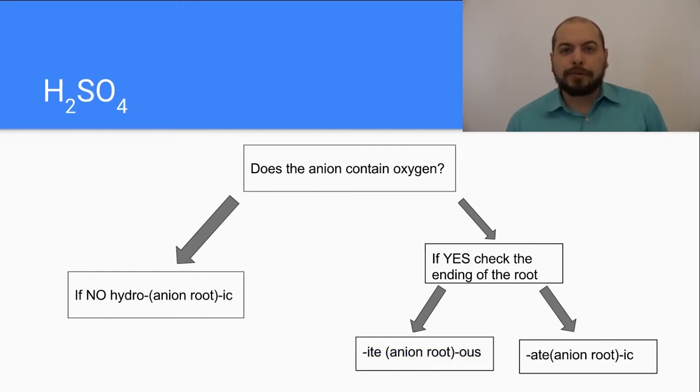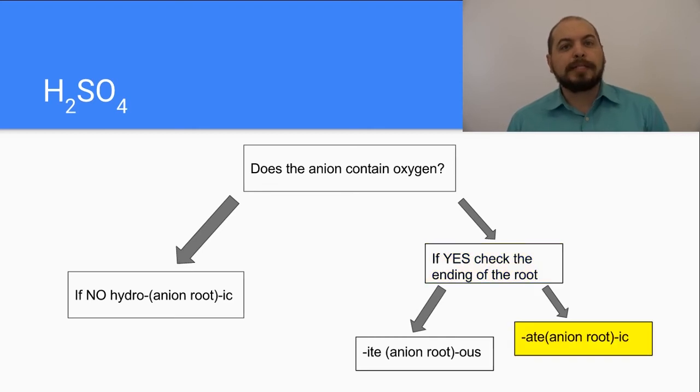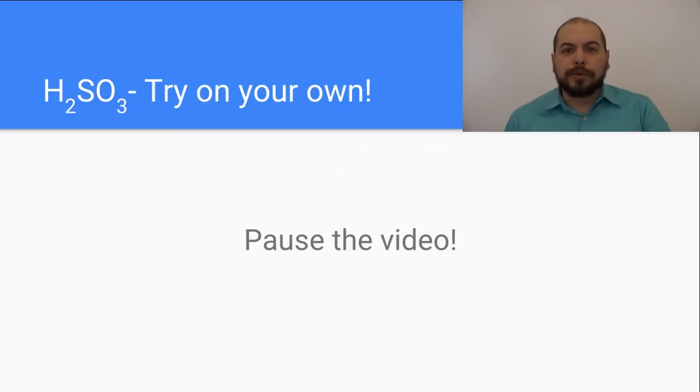Now the last one I'm going to guide you through is this one, H2SO4. Again we look at the anion and from this anion what we do is we assess that there is in fact oxygen. So we follow the flowchart to the right. Polyatomic name of this ion is sulfate. Therefore we continue to the right on the flowchart and we see that this is going to be sulfuric acid. Again we use the root of the anion. We are then going to follow with -ic acid. So therefore this is sulfuric acid, H2SO4.